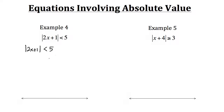Now here it's going to be similar to what we did with the previous examples, where we still need to have the positive and the negative value. So we're going to have 2x plus 1 is less than 5, and then we'll have 2x plus 1 is greater than negative 5.